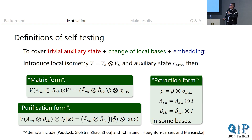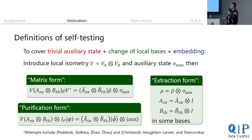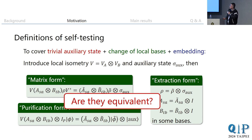To cover all these equivalences, people have invented several forms of definitions. If you work in self-testing, you're probably familiar with these. Different people use different definitions, and we are not the first to be dissatisfied with this — there are already attempts to bring a more unified or operational definition of self-testing. Nevertheless, these three forms are the most used in the literature, and it is worth asking: are they really equivalent from a mathematical point of view?